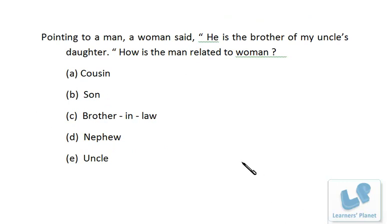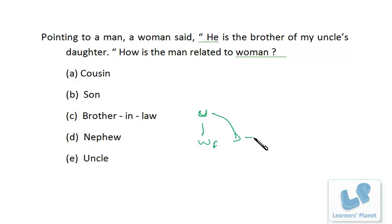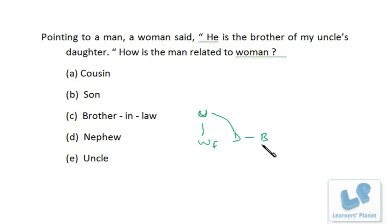Next: Pointing to a man, a woman said, 'He is the brother of my uncle's daughter and her brother.' The uncle's daughter and her brother are cousins of the woman. He is the brother of the uncle's daughter, so all of them are in the same generation — they are cousins.